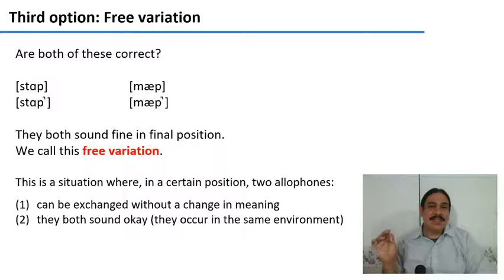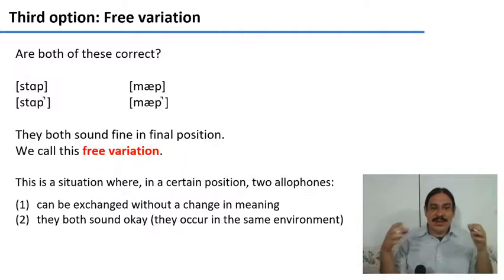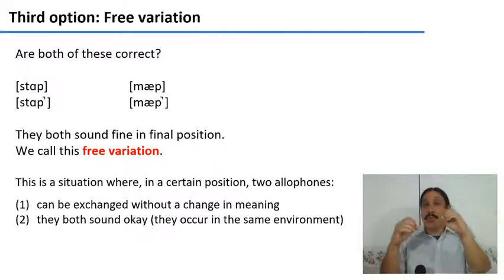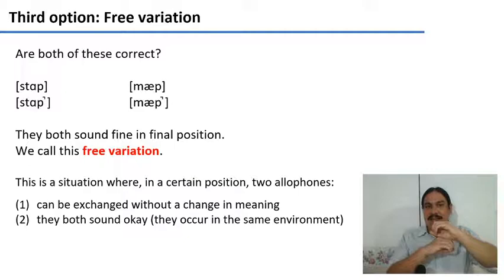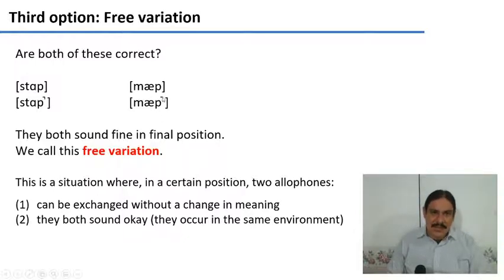We're going to call this configuration free variation. Free variation is a configuration of two sounds where these are allophones. However, they can both co-occur in the same environment. They are not in complementary distribution. So these are two allophones of P, and both of them are present when the P is at the end of a word. And because they do not change the meaning, you could really choose to say it in one way or the other. This is what we call free variation.